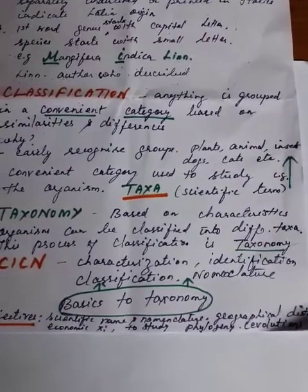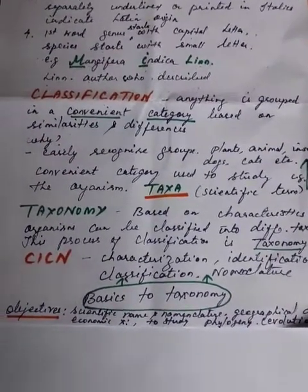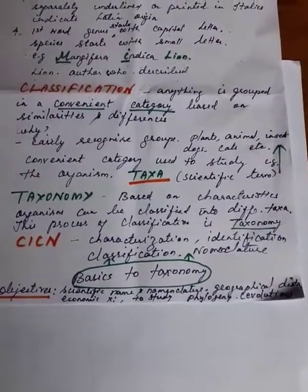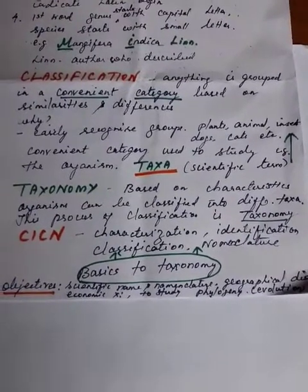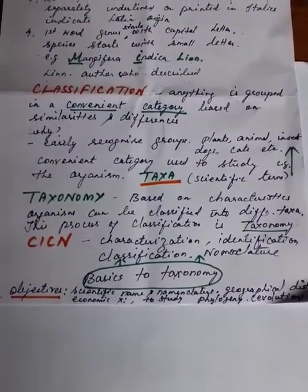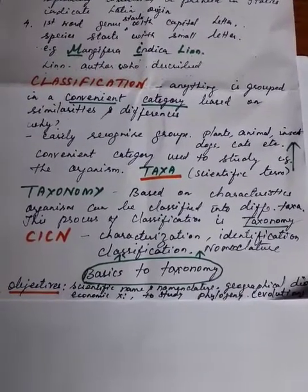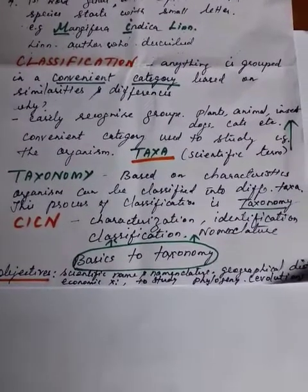So plant is a taxa, animal is a taxa, insect is a taxa, dog is a taxa, cat is a taxa. What is taxonomy? It is a branch of biology that deals with the study of organisms classified based on their characteristics. The process of classification is taxonomy. You can easily remember the basics of taxonomy with: C — characterization, I — identification, C — classification, N — nomenclature.